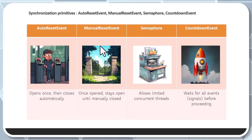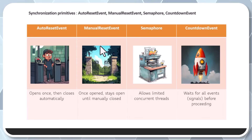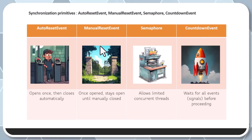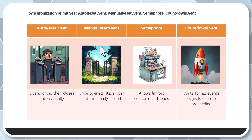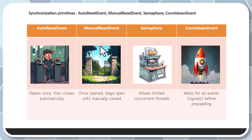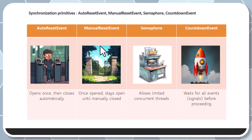ManualResetEvent is like a gate — once the gate is open, people can move through any number of times unless somebody closes the gate. Semaphore is like a printer — it handles only a few jobs at a time, so it handles limited concurrent threads. Then we have CountdownEvent, like a rocket launch — we check with every team whether things are okay, and when all teams give the go-ahead, the rocket launch proceeds. So we wait for all event signals before proceeding. If you remember this analogy, it will help you understand the concepts thoroughly.